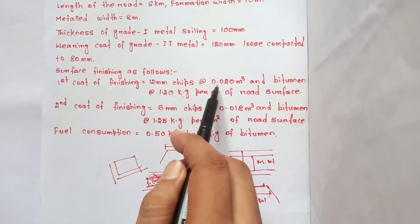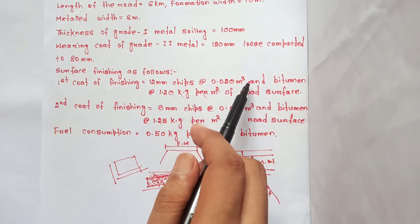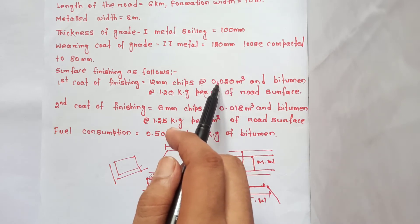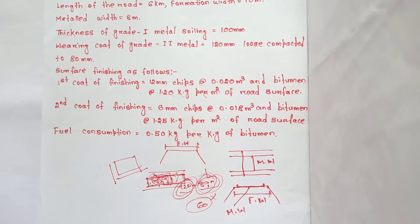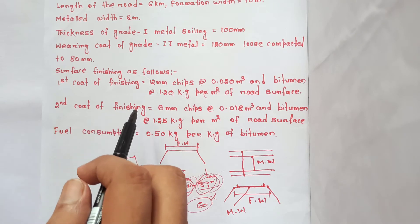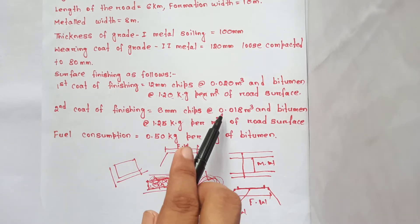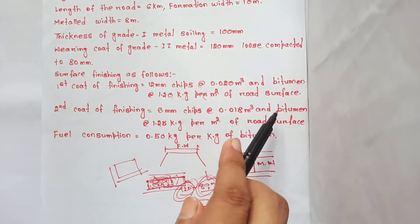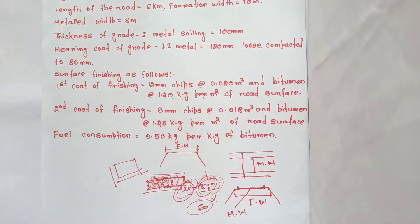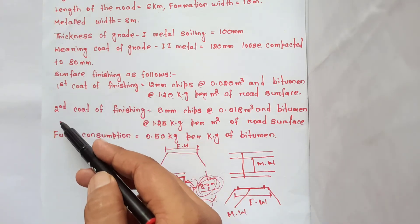First coat bitumen: 1.20 kg per m², chips at 0.020 m³ per m². Second coat of finishing: 6 mm chip size, 0.018 m³ per m². Bitumen for second coat: 1.20 kg per m².